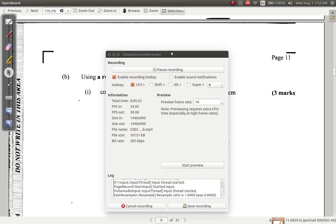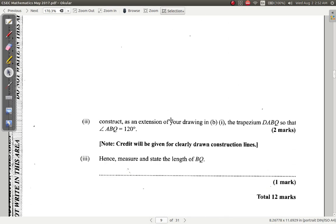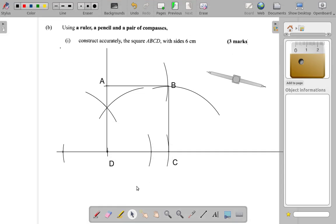After that, let's see what else they say I'm to do. Construct as an extension of your drawing in B1, the trapezium DABQ so that angle ABQ is 120 degrees. So this is B2, and I'm going to make some adjustment to B1. So A to B to Q is 120.